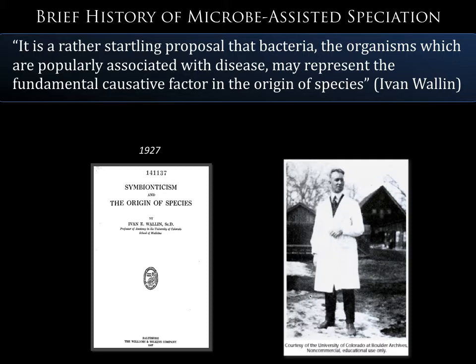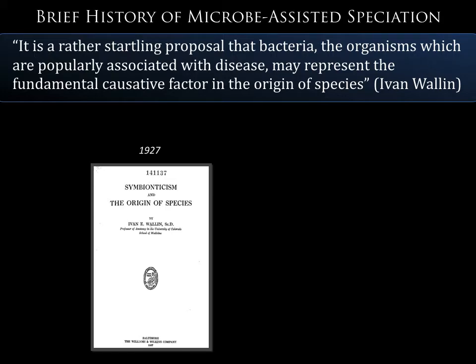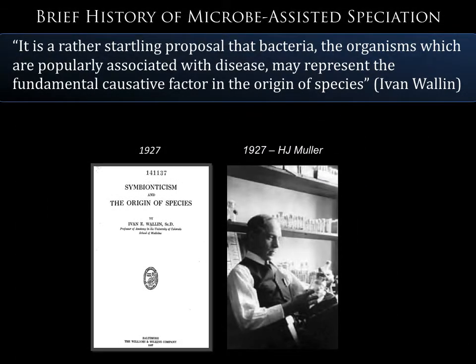There were still many debates about what was the hereditary material and source of evolutionary change. In the same year Wallen publishes his book, H.J. Muller publishes his Drosophila radiation genetics work showing that you can cause transmutability in flies and those mutations map to the nuclear genome. This is the start of the modern synthesis, where genetics in the nuclear genome and variation in the nuclear genome get incorporated into Darwin's evolutionary theories. We move from eukaryocentrism with Darwin to nucleocentrism with the modern synthesis.